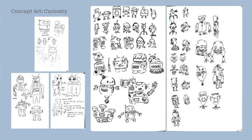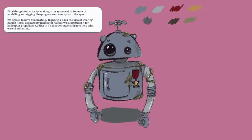These are my concept designs for Curiosity. I played around with many shapes, spherical to more detailed, and experimenting whether he floats or whether he's a rover, and also what he would look like wearing human clothing. After discussion and group feedback, the final model was made with a much simpler and cleaner silhouette, so you can read him from afar.